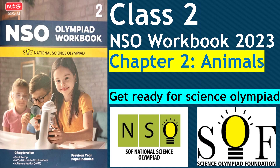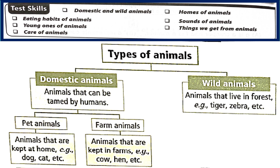Today we are going to cover chapter 2, that is Animals, of Class 2 NSO workbook. Let's see what all things can be asked from this chapter: domestic and wild animals, homes of animals, eating habits of animals, sounds of animals, young ones of animals, things we get from animals, and how do we care for animals.